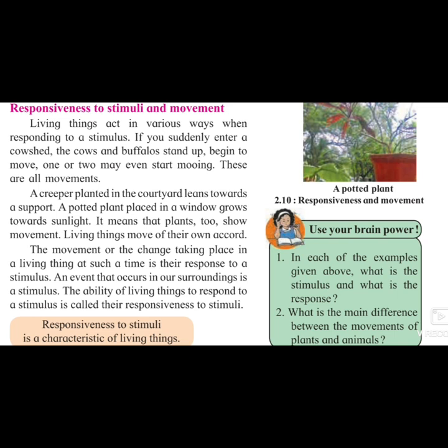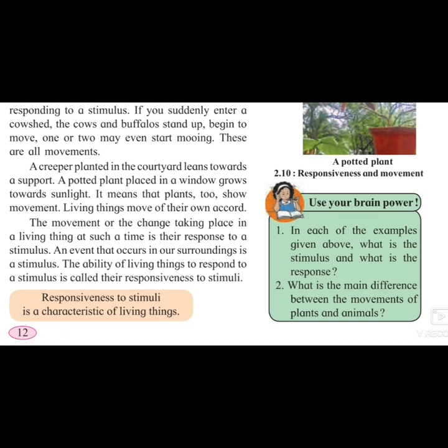The ability of the living thing to respond to a stimulus is called their responsiveness to stimuli. Ability means our stamina or capability to respond. If someone pricks you with a pin and you have not reacted to it, it would be strange — but normally we do react. So the ability to react or respond to a stimulus is called responsiveness to stimuli. Responsiveness to stimuli is also one of the characteristics of living things. The remaining part and last part of the lesson we will study later. I hope you have understood this. Thank you.